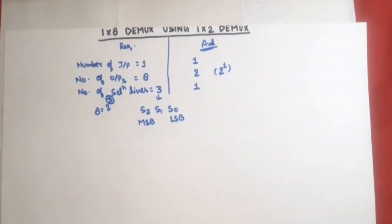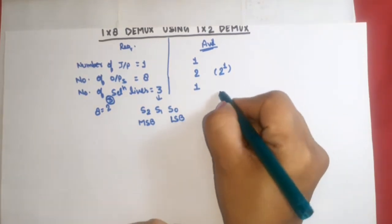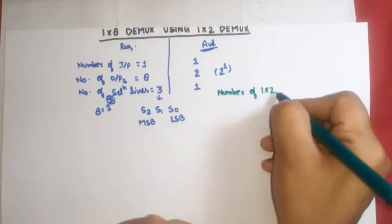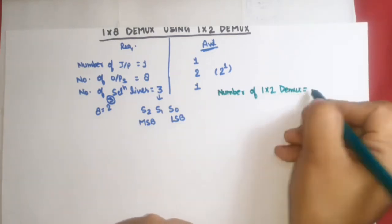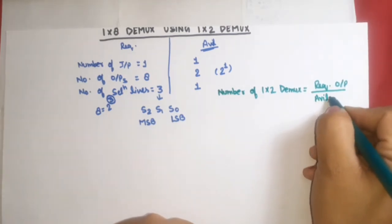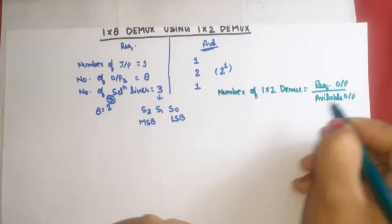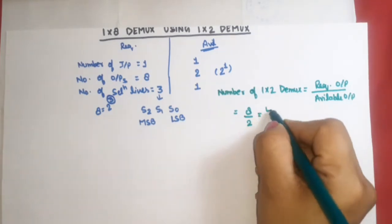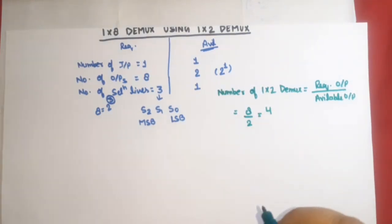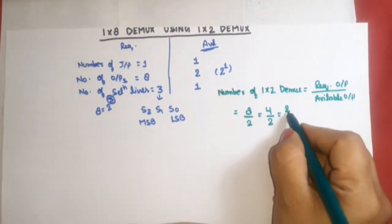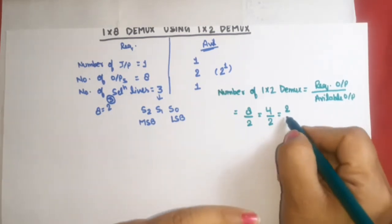Now we need to find out how many 1-to-2 demultiplexers are required. The number of 1-to-2 demuxes required is equal to the required output divided by the available output. Required output is 8 and available output is 2, so 8 divided by 2 gives us 4. This 4 can again be divided by 2 to get 2, and we can divide again.